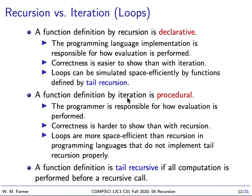For this reason, correctness is easier to show than with iteration, because all we have to worry about is the definition. We don't have to worry about how it's going to be evaluated — that is done by the programming language. We're going to assume, naturally, that the programming language has been implemented correctly.